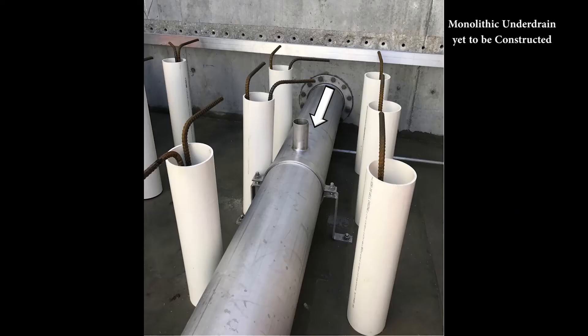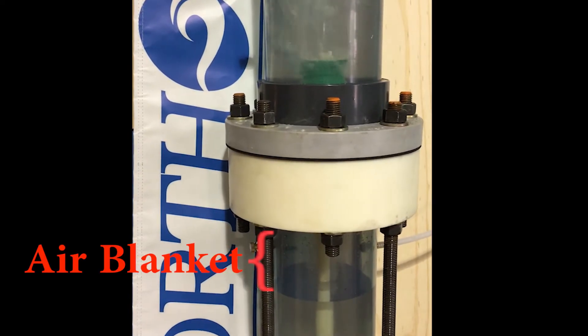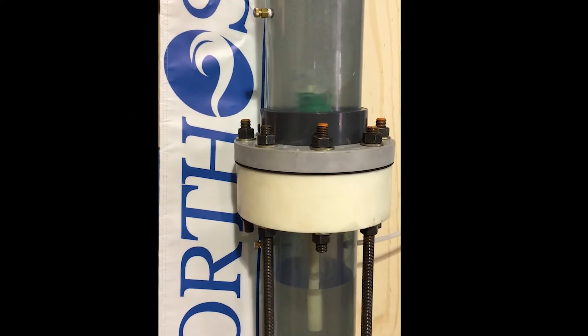As scour air is introduced into the plenum of false floor under drain systems, it collects and builds an air blanket evenly across the filter footprint and downward from the top of the plenum, displacing the water. One may see an air blanket in a test column in our Orthos Research Center.